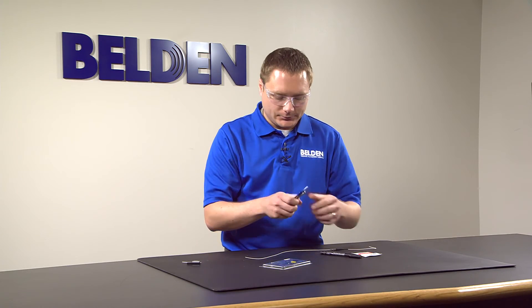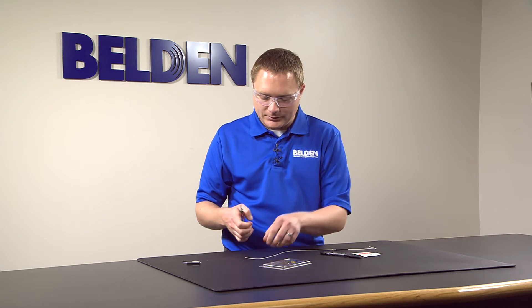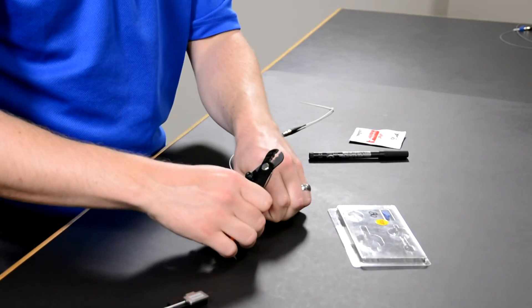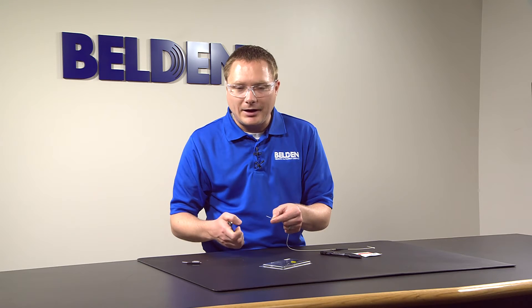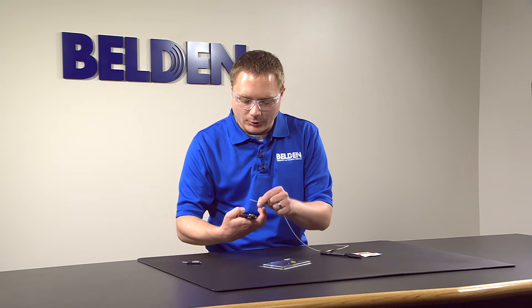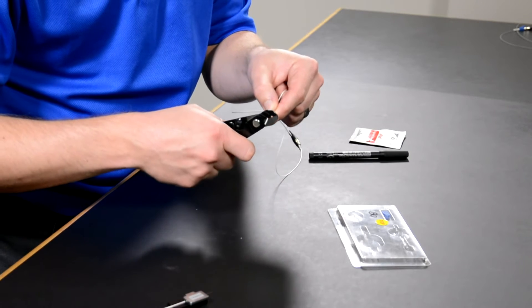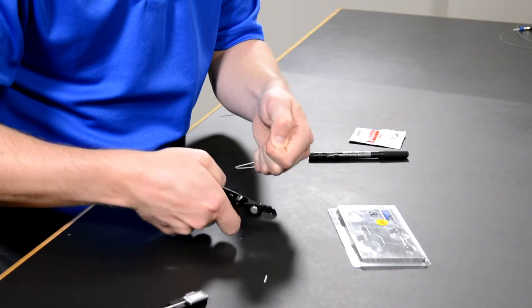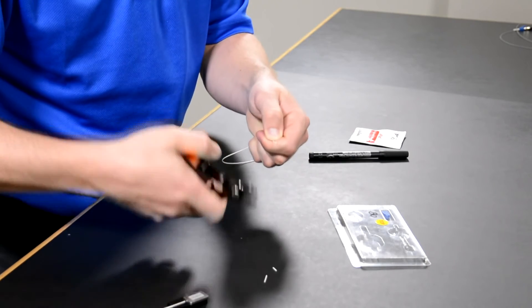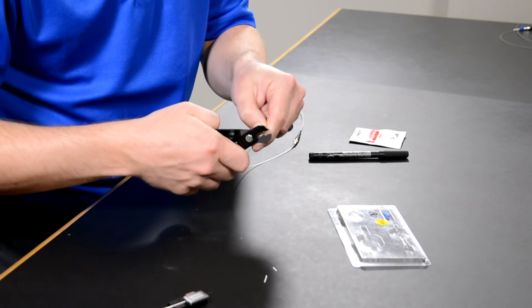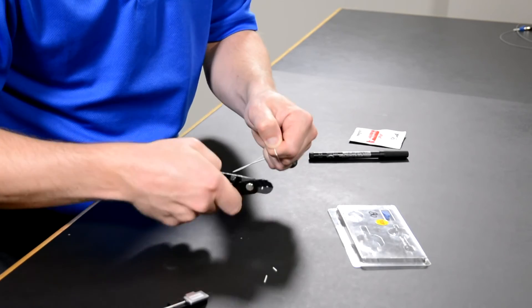We're ready to take our strippers and start stripping the fiber. We usually do a little bit at a time. I'm going to start typically about a centimeter at a time, and we're going to use the middle groove to remove the jacket. Let's do a little bit there, another piece off, and finally, the last at the 25 millimeter mark.